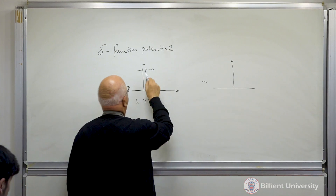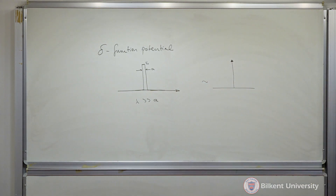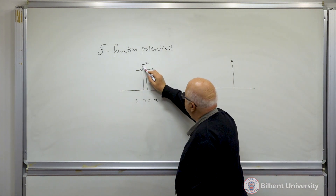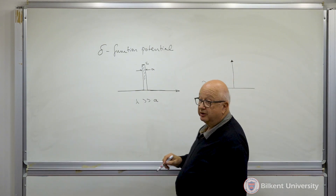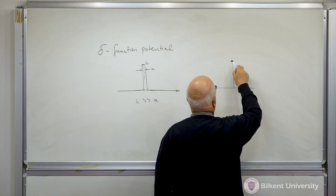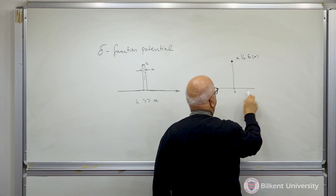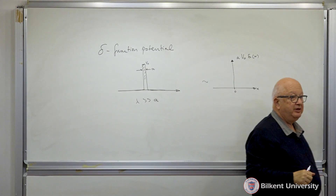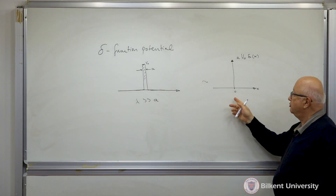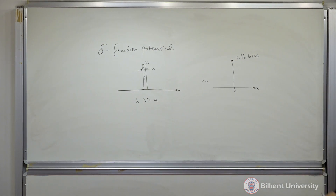If you have some width with strength going to zero and the thickness of the barrier is A, you can approximate this. Remember that the area under this is associated with the strength of the delta function. So we get something like A·v₀ times delta of x if this is at the origin. This is a much easier problem to solve, making a good approximation for a very thin barrier or well.